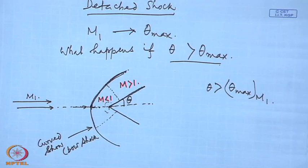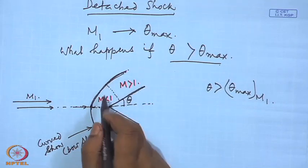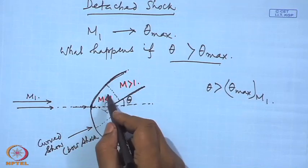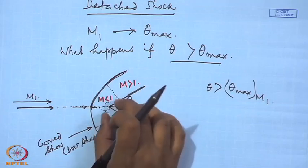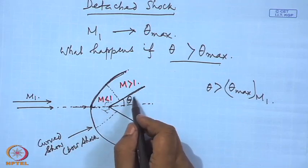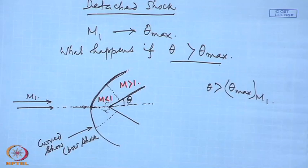In such a configuration, the shock solution corresponding to both the strong solution and the weak solution is found. In the part where the flow is subsonic, this shock is no longer independent of the downstream conditions. A change in geometry — that is, a change in pressure in the subsonic portion — affects the entire flow up to the shock and the shock will try to adjust itself to the new condition. For a blunt-nosed body, theta is greater than theta_max corresponding to any Mach number, and consequently for a blunt-nosed body the shock is detached at all Mach numbers.